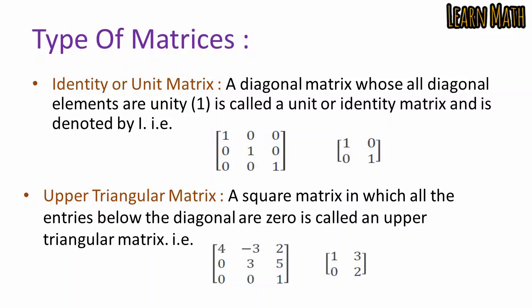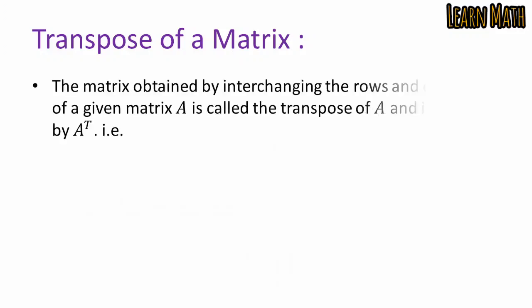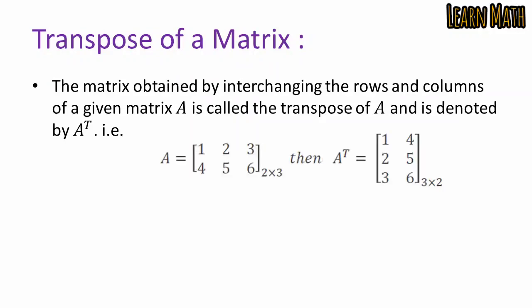The transpose of a matrix is obtained by interchanging the rows and columns of a given matrix A, and it is denoted by A transpose. For example, given matrix A of order 2×3, when we take the transpose, we change rows into columns and columns into rows. So A transpose equals [1, 4; 2, 5; 3, 6], which has order 3×2, meaning 3 rows and 2 columns.